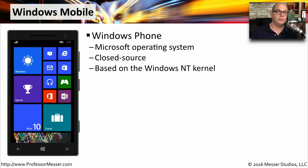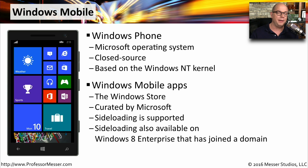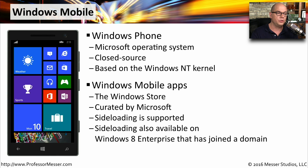Windows Mobile is the operating system that you will see on the Windows Phone. This is a Microsoft operating system, and it is closed source. You do not have access to the source code for Windows Mobile. It's based on the Windows NT kernel. You'll find developers creating mobile applications and providing them on the Windows Store. This is a store that is curated exclusively by Microsoft, although there is side loading you can do so that you can load applications onto the phone from other sources other than the Windows Store.